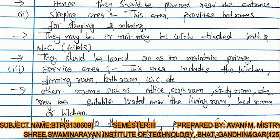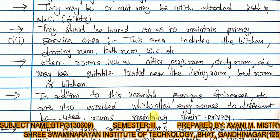The service area includes the kitchen, dining room, bathroom, WC, and other rooms such as an office room, puja room, and study room, which may be suitably located near the living room, bedroom, or kitchen. In addition to these, verandas, passages, and staircases are also provided to allow easy access to different rooms.